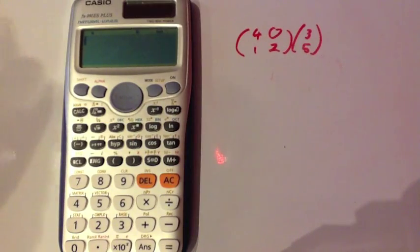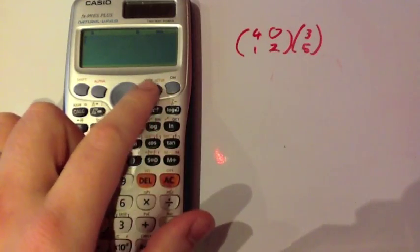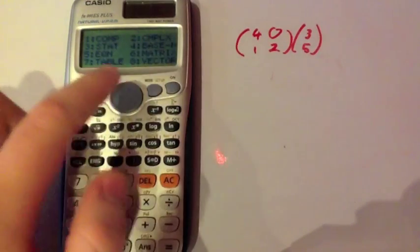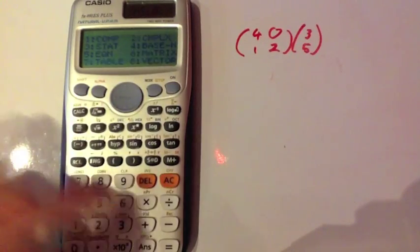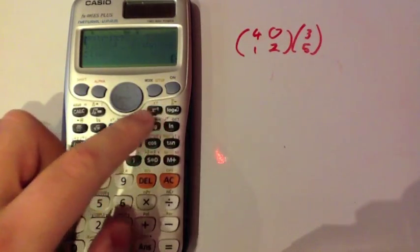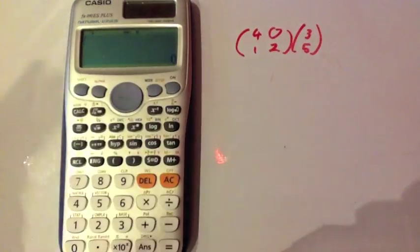First of all we need to change our calculator into the matrix mode. Press mode at the top and you'll get your different modes and we want matrices which is number 6. We've now put our calculator into matrix mode, MAT. I've just pressed all clear for that prompt.